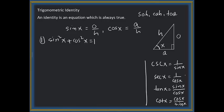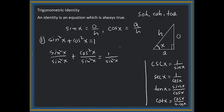We will now derive two more identities through manipulation. For the second identity, we divide the first identity by sine² x. We get sine² x / sine² x + cosine² x / sine² x = 1 / sine² x. Sine squared over sine squared is 1, cosine over sine is cotangent, and 1 over sine is cosecant. So we get 1 + cotangent² x = cosecant² x.